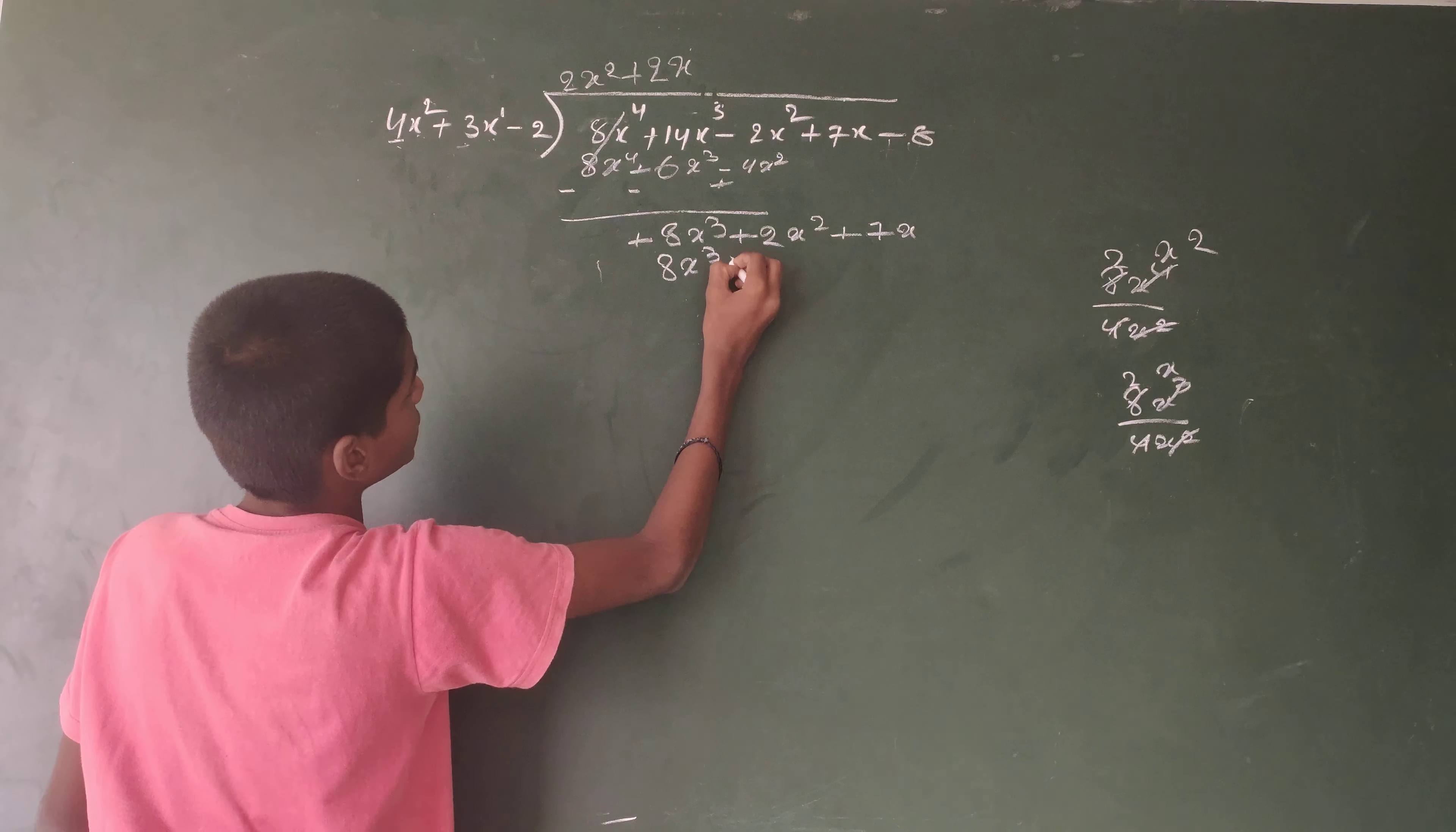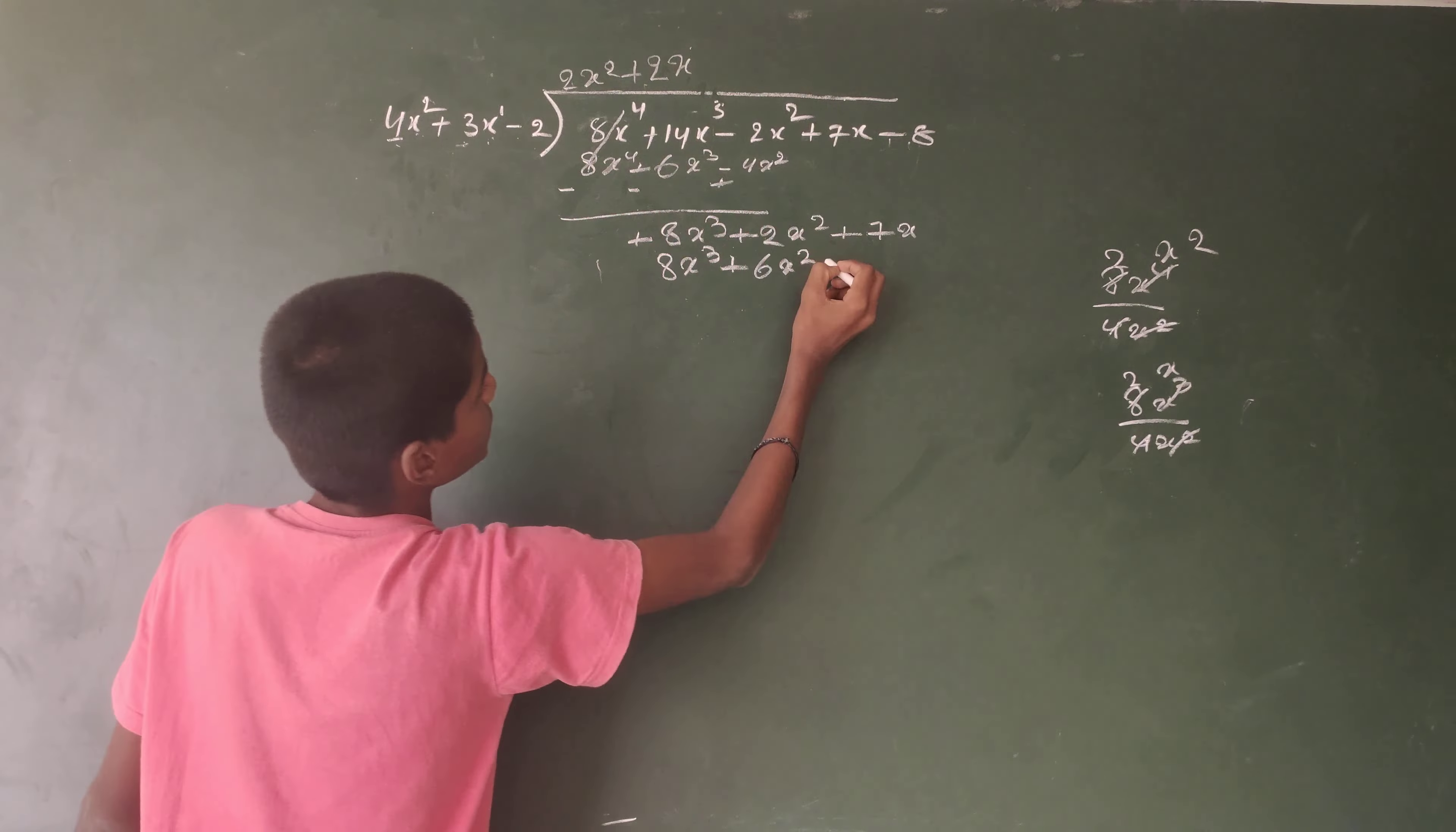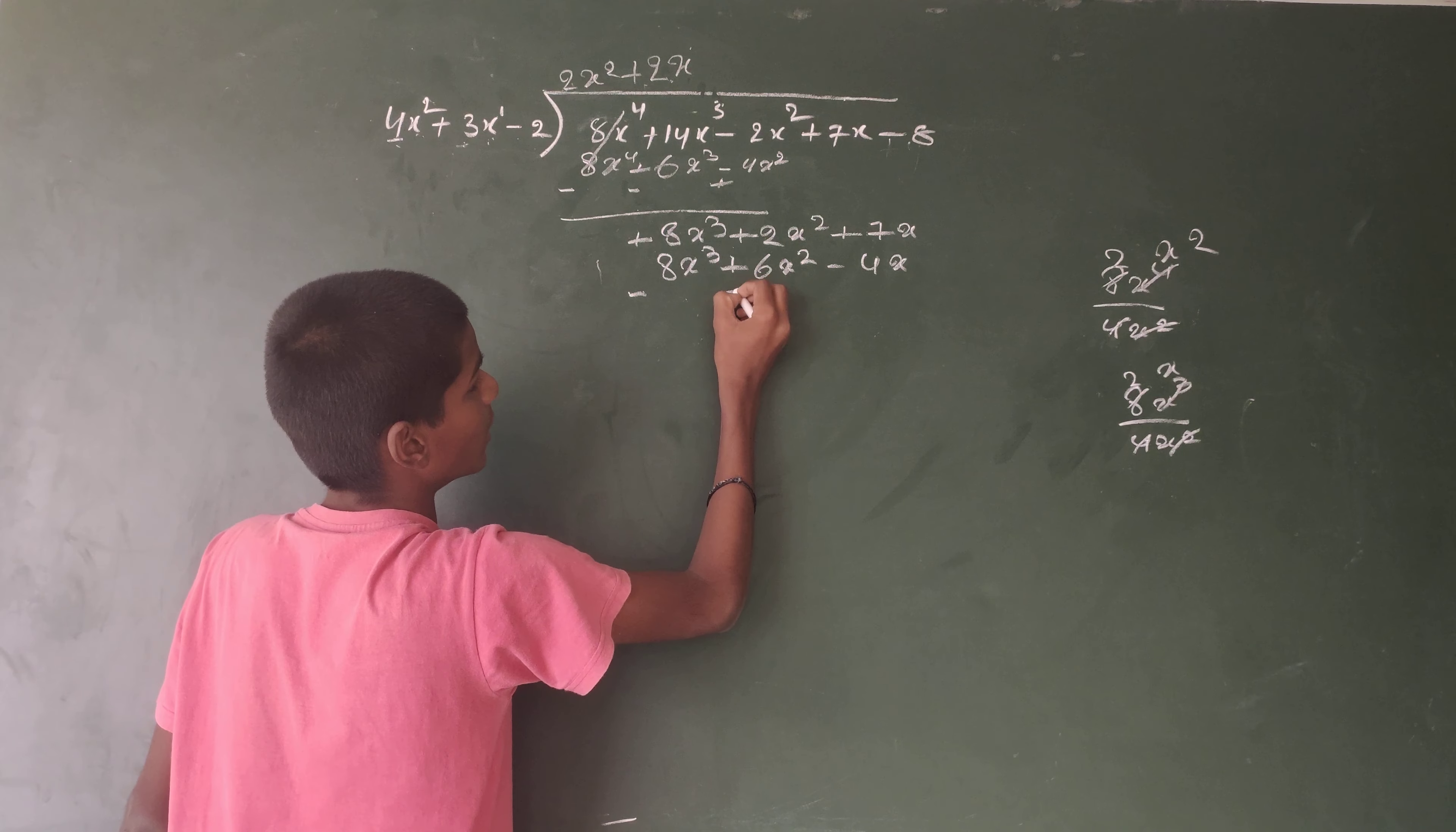Plus 3 times 2x is 6x². Minus 2 times 2x is minus 4x. Here symbols change. Minus minus becomes plus.